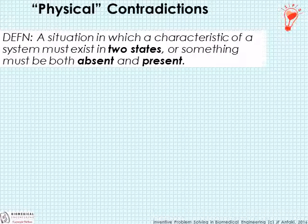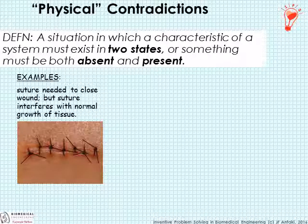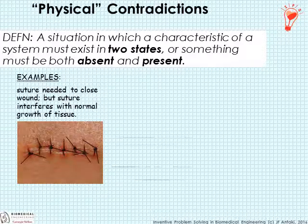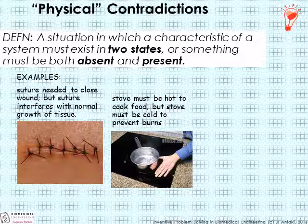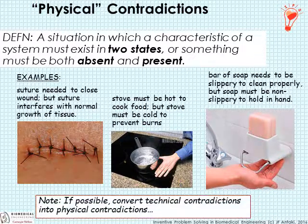The other kind of contradiction is a physical contradiction — a situation in which a characteristic of a system must exist in two states, or something must be both absent and present at the same time. For example, suture needs to be present to close a wound, but its very presence interferes with normal tissue growth, so it needs to be absent. The stove must be hot to cook food, but cold to prevent burns. A bar of soap needs to be slippery to clean properly, but non-slippery to hold in the hand. If we can convert technical contradictions to physical contradictions, it opens up a new toolbox of opportunities — we'll get to that in a future class.